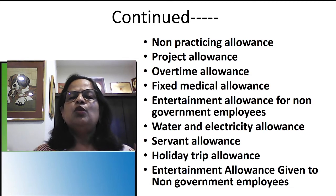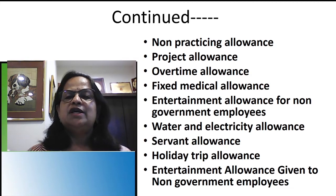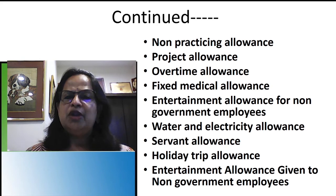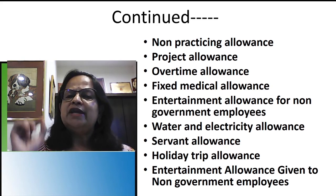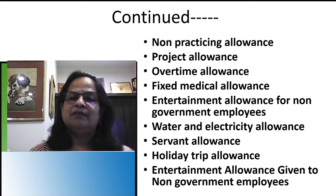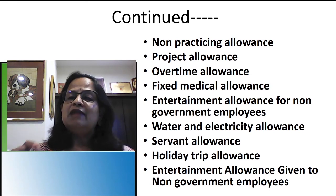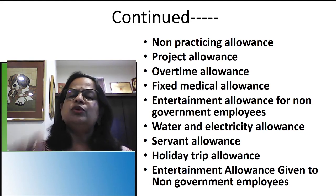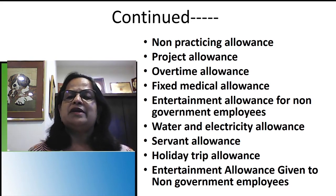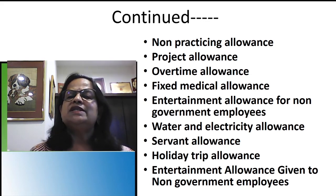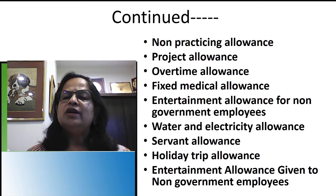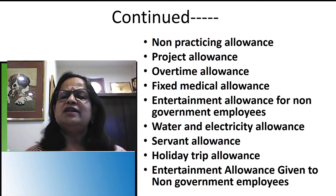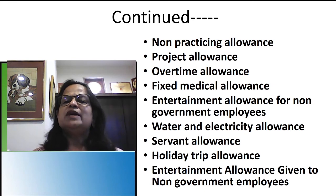Non-practicing allowance is given to government doctors working in government hospitals who sign an agreement stating they will not do private practice. This allowance is completely taxable. If the doctor is receiving non-practicing allowance, he is not allowed to do any private practice; the government can take action if he does. Project allowance is given to researchers working in universities on social or other research projects — also completely taxable.